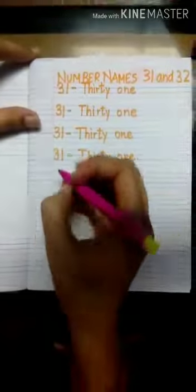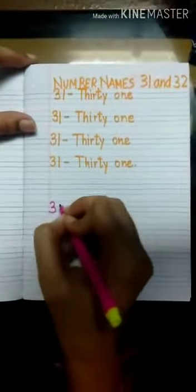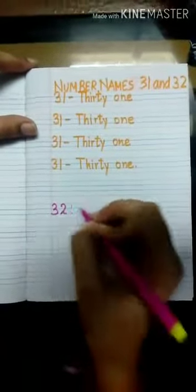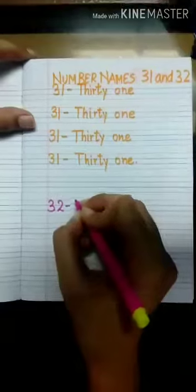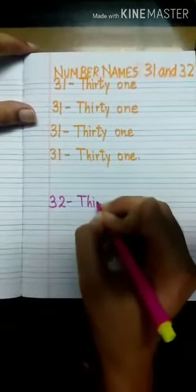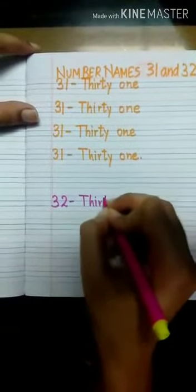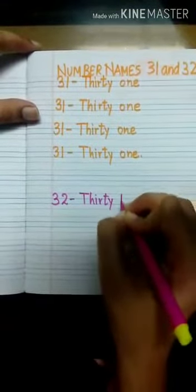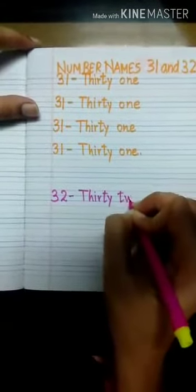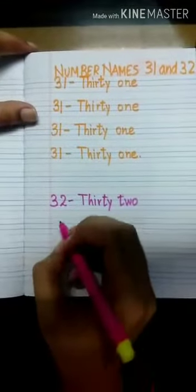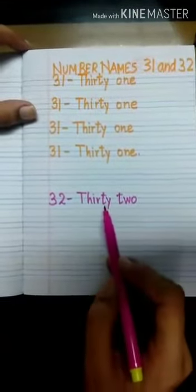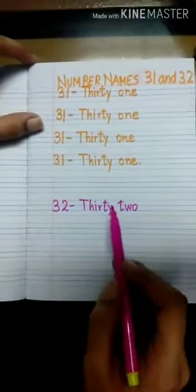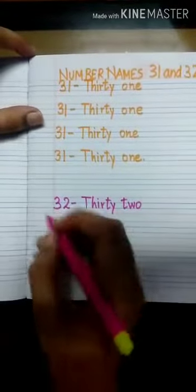Now we will write the spelling of 32. 3, 2 makes 32. T, h, i, r, t, y, t, w, o: thirty-two, 32. To write 32, we will first write the spelling of 30 and then 2.